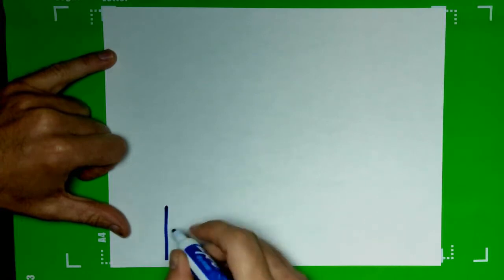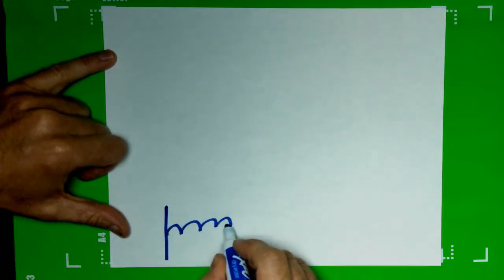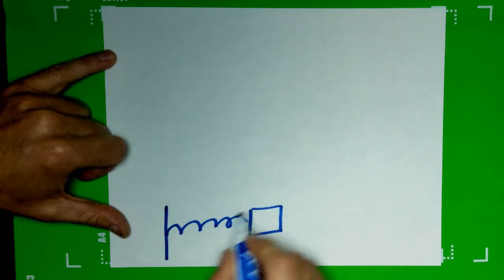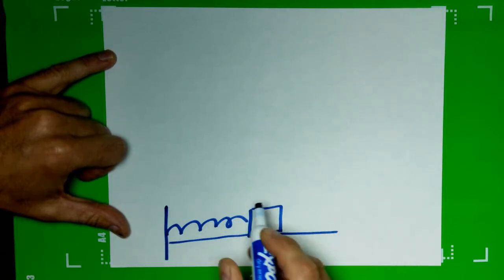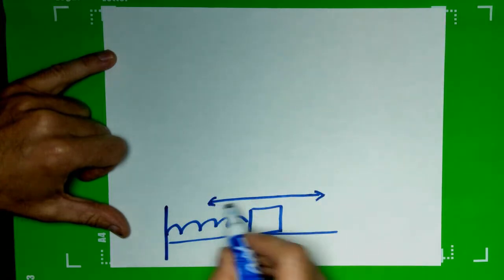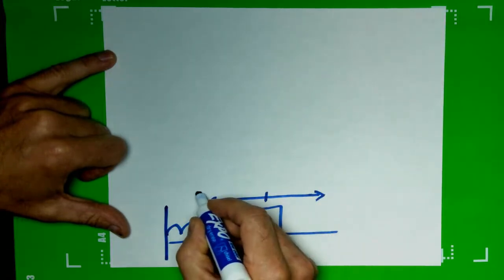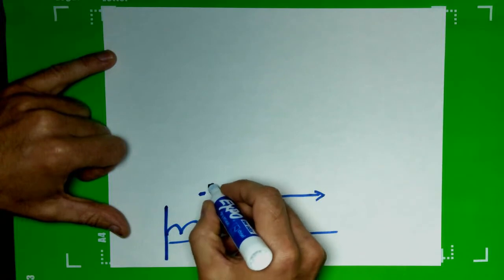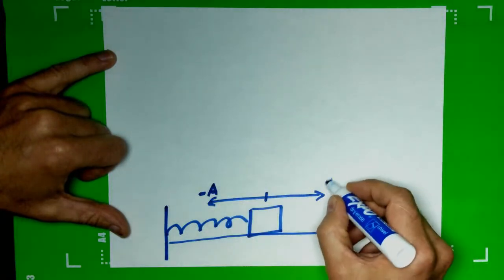Okay, so I'm going to draw down here at the bottom our spring and a block moving on a frictionless table, and it's oscillating back and forth from here. We're going to call this negative A and positive A.